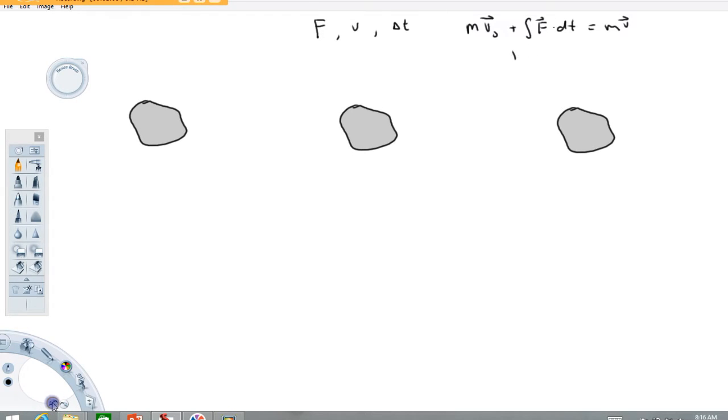The way you write an impulse momentum diagram is this: you basically have a picture for all three parts of this equation.